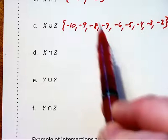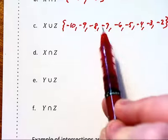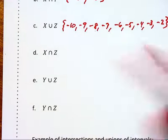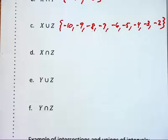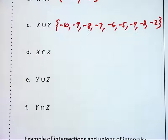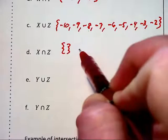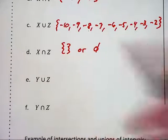We cannot use ellipses and just say from here to there, because when we are listing out this set as a roster, we basically have to write each of the elements. When we go to find the intersection of X and Z, there is none, so we have the empty set or the null set.